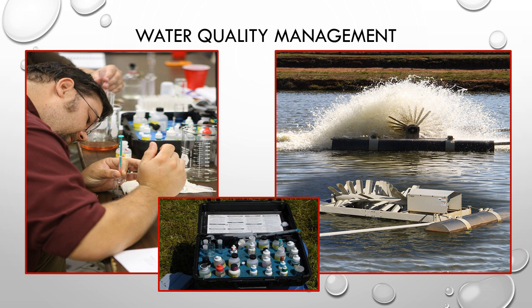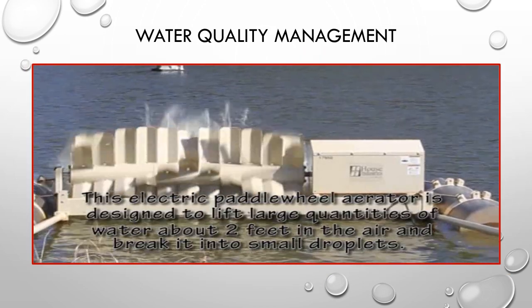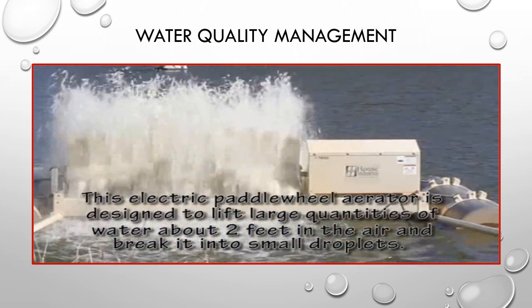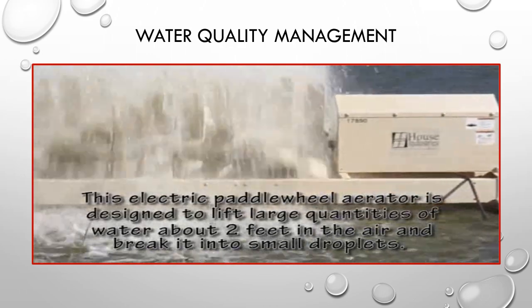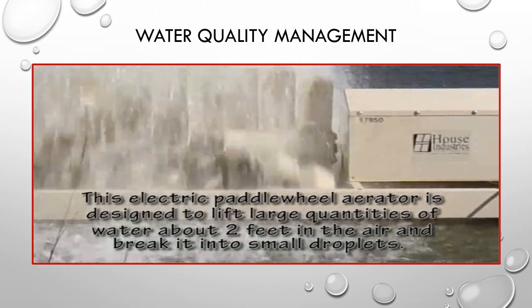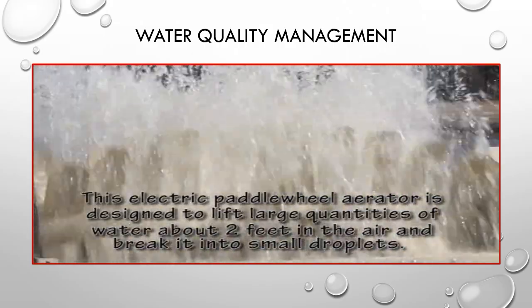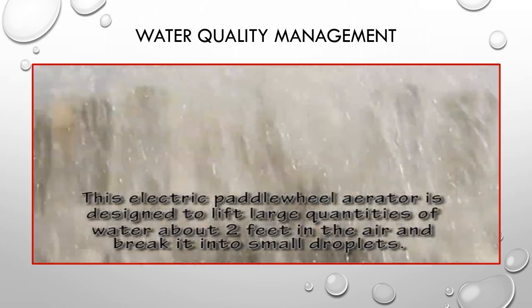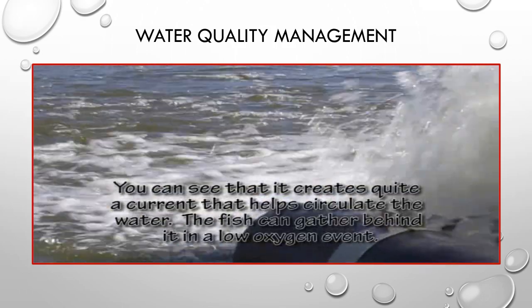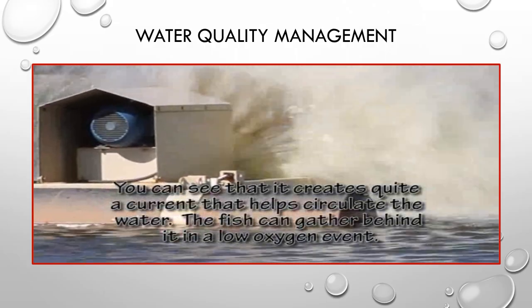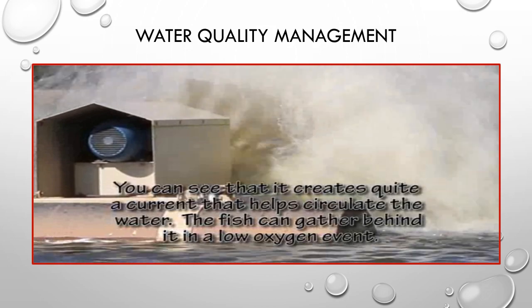Farmers have to closely monitor water quality to ensure optimum growing conditions. One of the most dynamic aspects of water quality is oxygen. Oxygen levels rise and fall during the day and tend to be their lowest just before sunrise, so sometimes mechanical aeration is used to increase oxygen levels. This electric paddle wheel aerator is designed to lift large quantities of water about two feet into the air and break it into small droplets. Breaking the water into small droplets creates a large surface area and makes it easy for the oxygen from the surrounding air to diffuse into the water. You can see that it creates quite a current that helps circulate the water and oxygen. Fish will often line up behind one of these aerators during a low oxygen event.